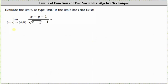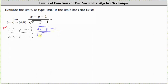Beginning with the given function, let's call this Method 1. We will rationalize the denominator by multiplying the numerator and denominator by the conjugate of the denominator, which is the square root of the quantity x minus y plus one. Multiplying the denominator: the square root of x minus y times the square root of x minus y equals x minus y, then the plus and minus one terms cancel to zero, and negative one times positive one gives us minus one. We leave the numerator in factored form.